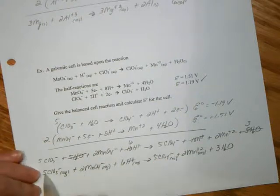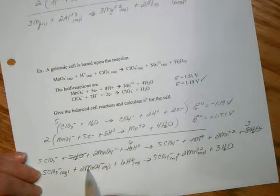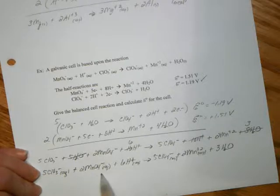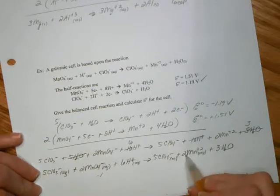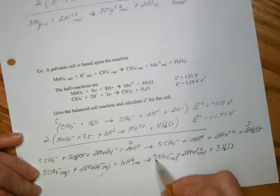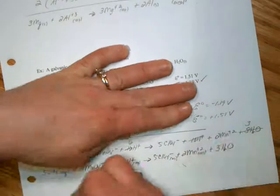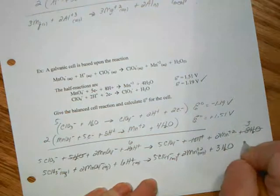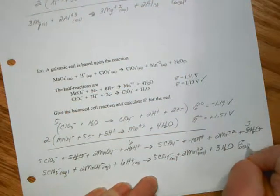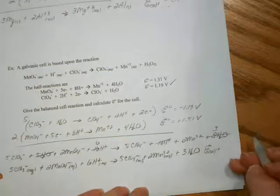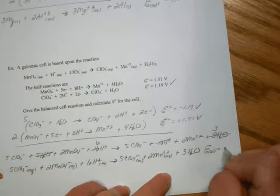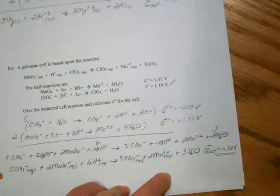And I want to make sure my charges are balanced. So I have, let's see, a negative five, negative seven with these two, plus six. So I have negative one here. And then I have positive four. Ah, negative five, negative one. My charges are balanced. And so all that I've left to do is get the E naught of the cell, which adding those gives us a measly 0.32 volts for the entire cell.